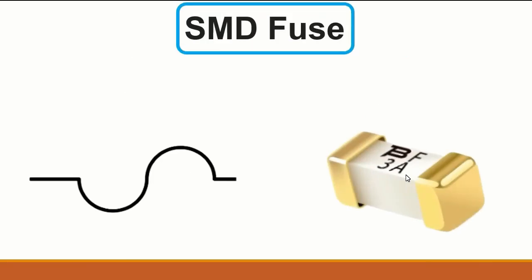Here we have the fuse — it could be an SMD fuse or a THT fuse. The symbol for a fuse is a specific fuse symbol, or sometimes it looks like a resistor symbol with a line over it. This real fuse here is rated 3 amps, meaning it can support a maximum of 3 amps.